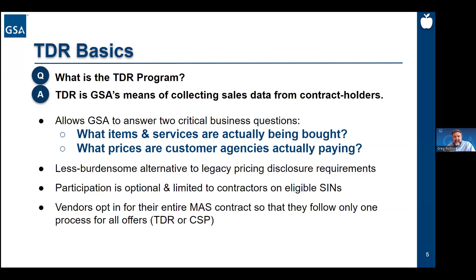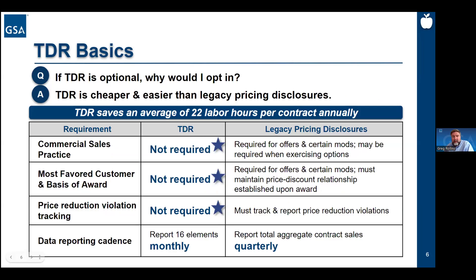Without TDR, under legacy pricing disclosure requirements, all GSA receives is catalog information and quarterly sales reports. There's some great information to be gleaned there, especially now that more of you have baselined into the FAS catalog platform, but it's not enough to get a full picture of what's being bought at the line item level. Moreover, catalog ceiling prices are kind of like the sticker price on a car. In order to really understand the market and conduct thorough market research on the GSA side, we owe it to our customers to understand not only the ceiling rate but the actual price paid, so that we can understand cost drivers like seasonality and supply and demand, locality-based pricing, and different moving pieces like that.